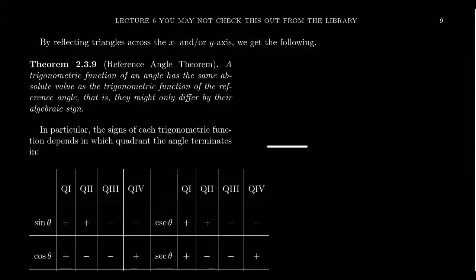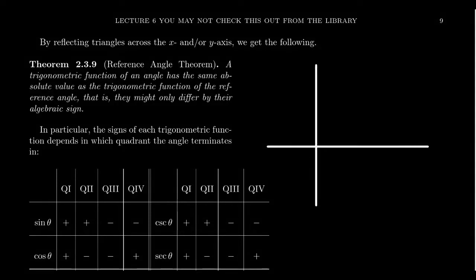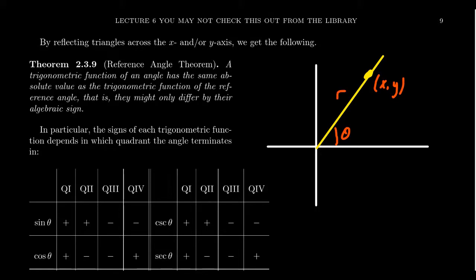Early in our lecture series, we learned about two different ways of defining the six trigonometric ratios. One way is to define them using a point: we have the x-axis and y-axis, we take some point which terminates in the plane, and the ray from the origin through this terminal point forms an angle. We can define the six trigonometric ratios using the x and y coordinates of that point, letting r be the distance from the point to the origin.